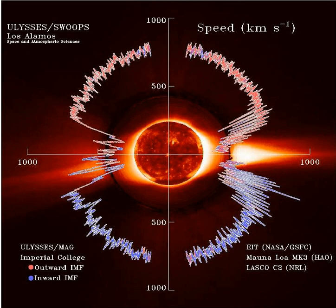The solar wind varies in density, temperature and speed over time and over solar latitude and longitude. Its particles can escape the sun's gravity because of their high energy resulting from the high temperature of the corona, which in turn is a result of the coronal magnetic field. At a distance of more than a few solar radii from the sun, the solar wind is supersonic and reaches speeds of 250 to 750 km per second.